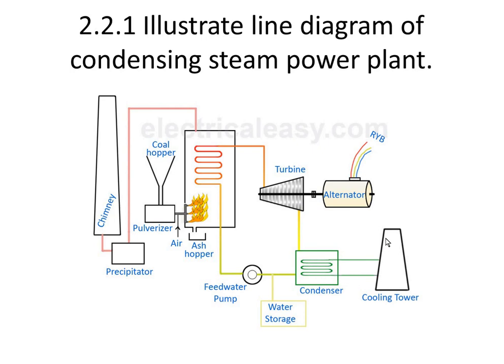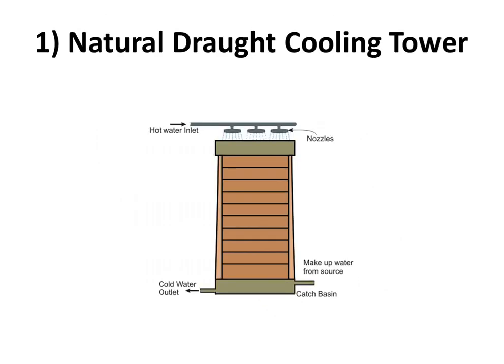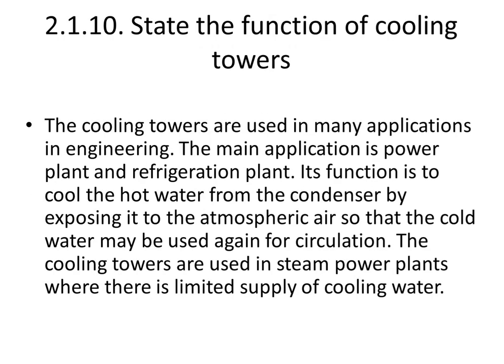The cooling tower has a fan. We have droplets. Cooling towers are usually used in many applications in engineering. The main application is the power plant and refrigeration plant. Its function is to cool the hot water from the condenser by exposing it to atmospheric air so that the cold water may be used again in circulation. Cooling towers are used in steam power plants where there is a limited supply of cooling water.